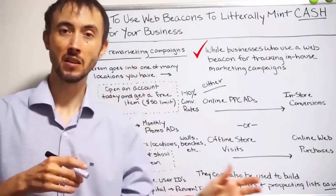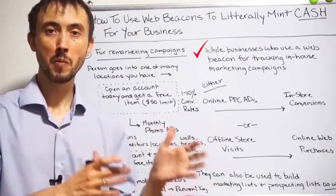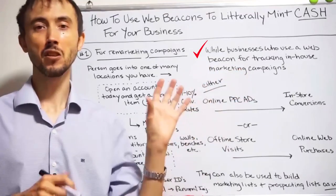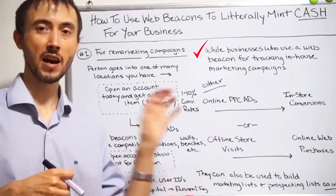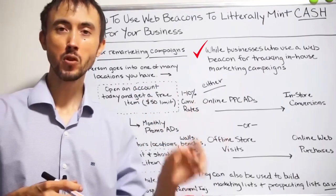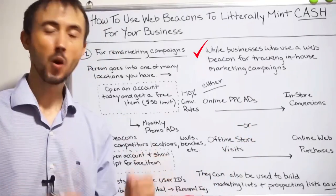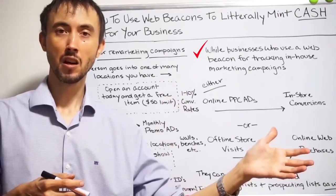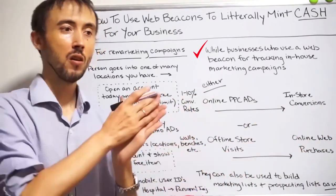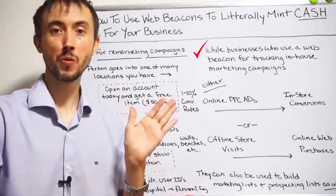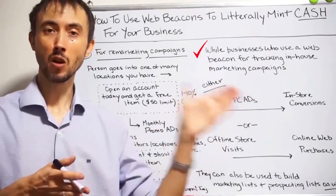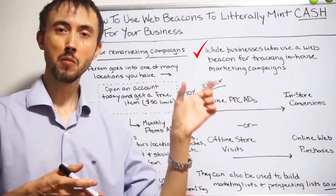A web beacon is a physical device you stick on the wall. You can Google it and see images — it looks like a rock, designed to disguise itself so people don't know it's tracking them. It tracks every single person who walks by who has a mobile device, pulling their mobile user ID as their phone connects through Bluetooth. Your phone is constantly trying to find local Bluetooth devices to connect to, and the beacon presents itself as one of those devices.